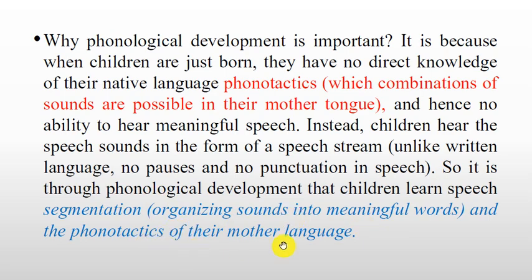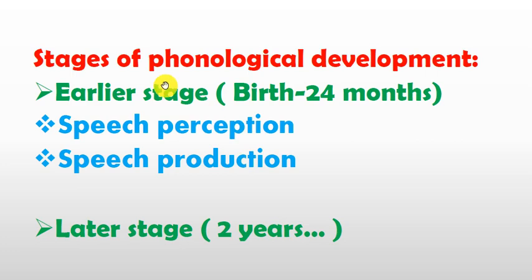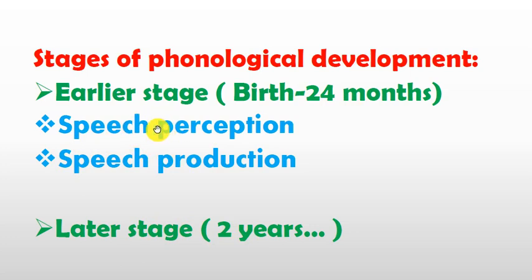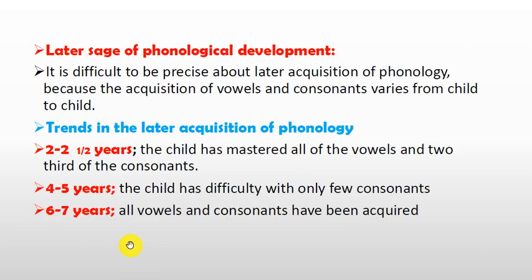There are two major stages of phonological development. The first stage starts right after birth and lasts up to 24 months. The second stage starts after two years of age. We have already discussed the first stage in a previous video on language acquisition, so in this video we will discuss the later stage of phonological development.